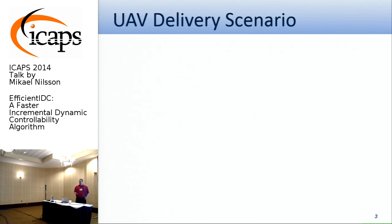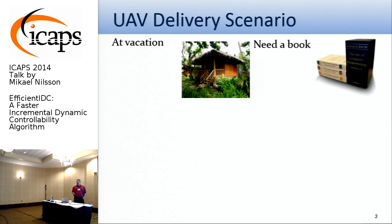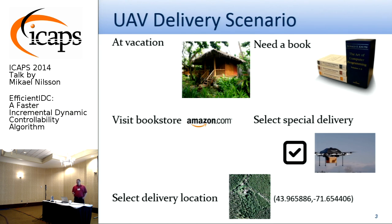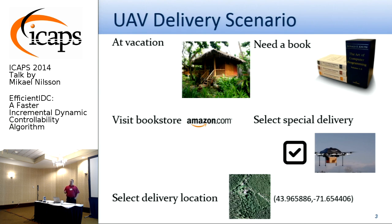The scenario I will use is called the UAV Delivery Scenario. I'm at my vacation place and I suddenly feel the need for a good book. I go online, visit the bookstore, and make a special delivery by UAV. I give my location, but it cannot be delivered to my door because that's too dangerous, so I will have to walk to a safe place where the UAV can land. There is also a contract between the buyer and seller: I will not keep the UAV waiting more than five minutes, and Amazon promised I should not wait more than ten minutes until the UAV arrives.